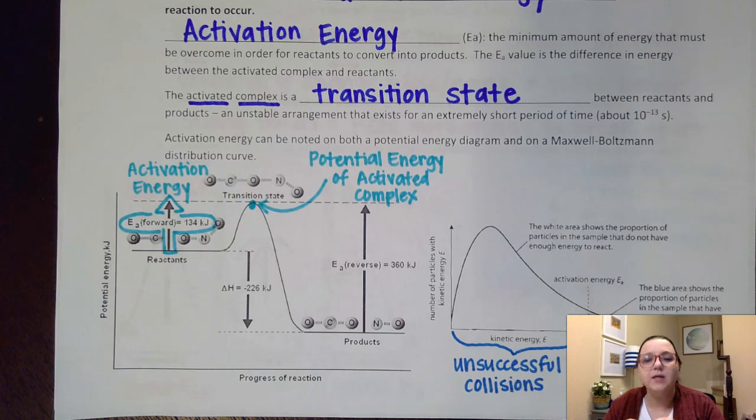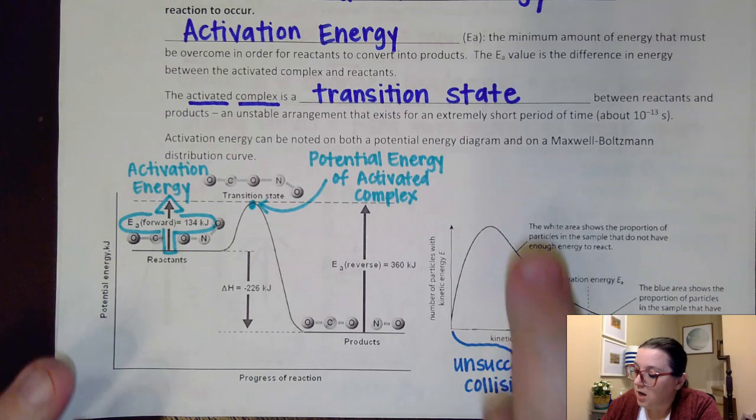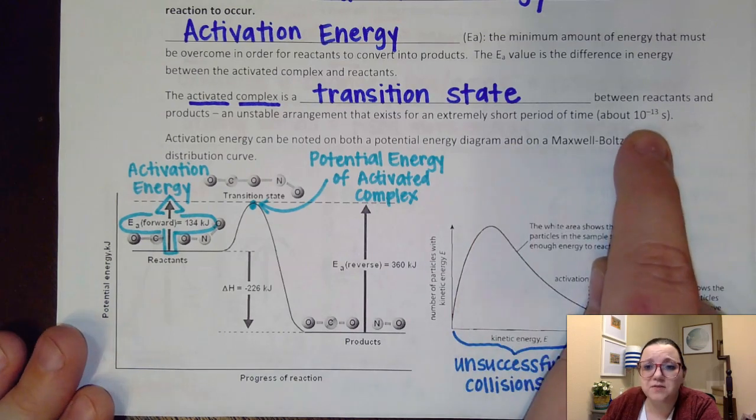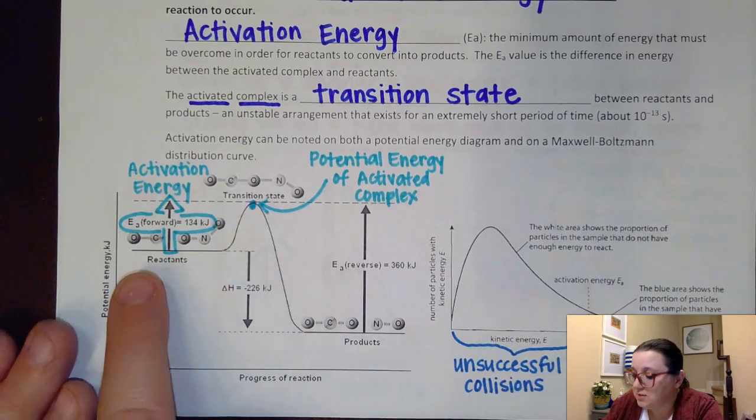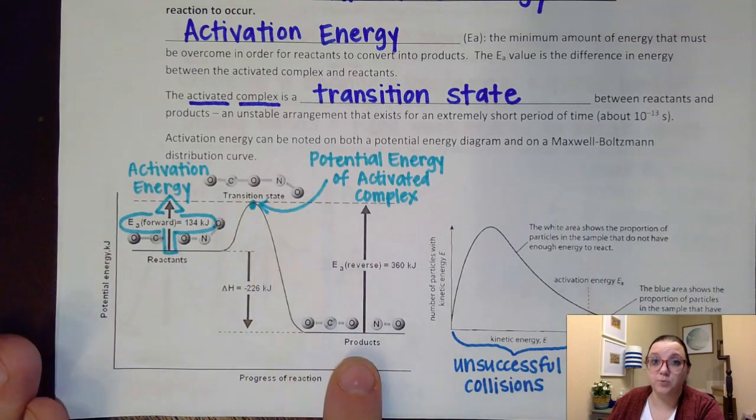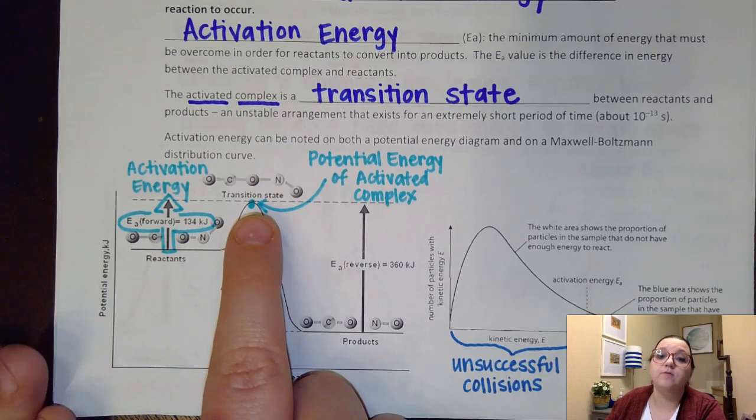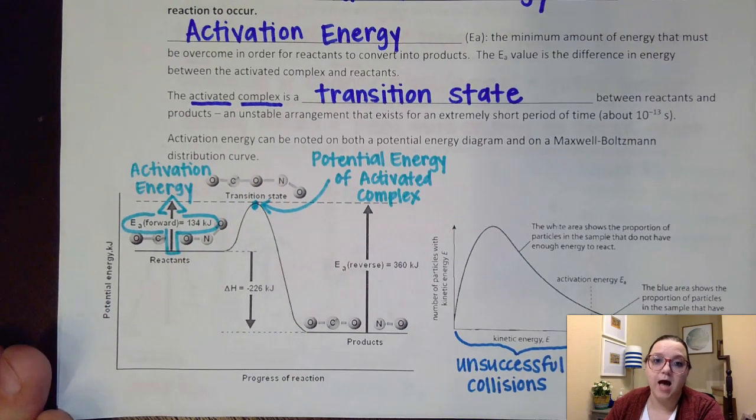That transition point exists for a very short period of time. You notice here less than a fraction of a second, we're talking 10 to the negative 13 seconds that we're here at this transition state. So the transition from reactants to products is pretty fast and we're at this transition state for a very minimal amount of time.